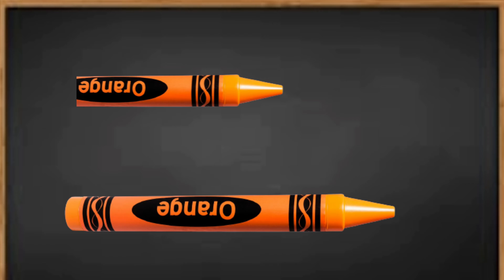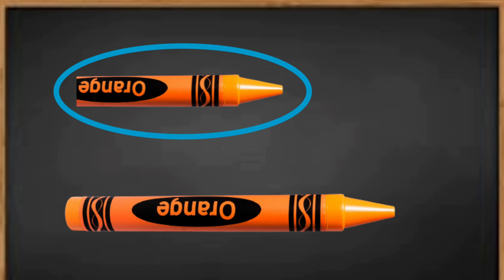In the second picture, the first crayon is short and the second crayon is long, so we will circle the first crayon which is short.